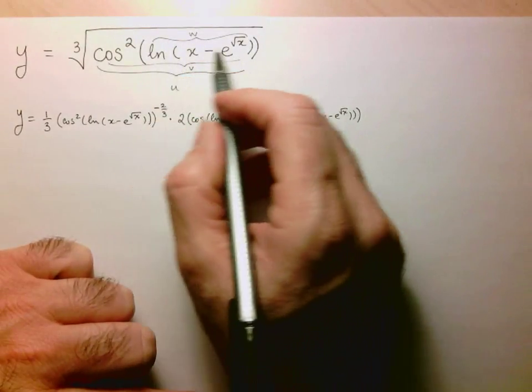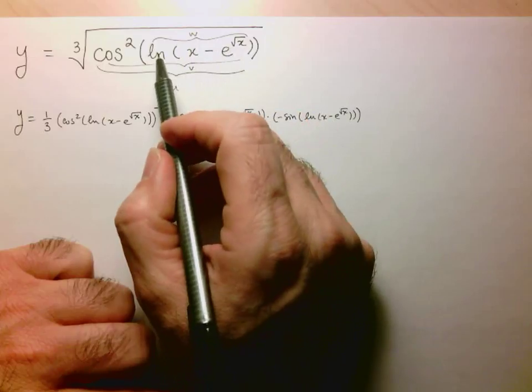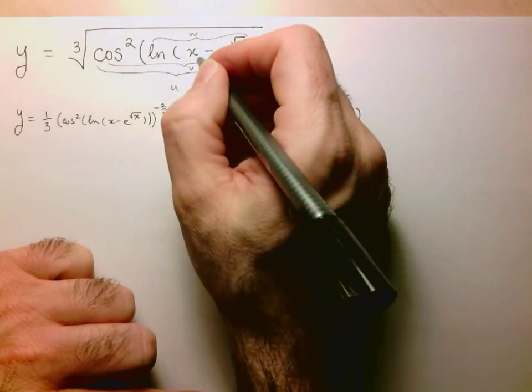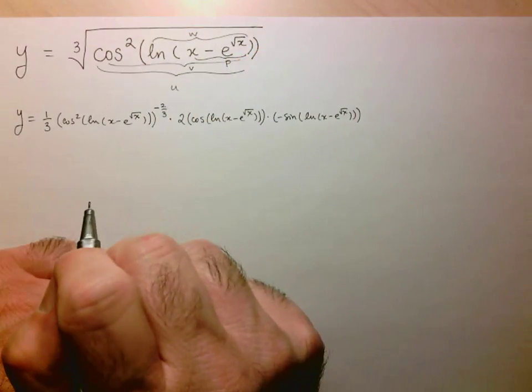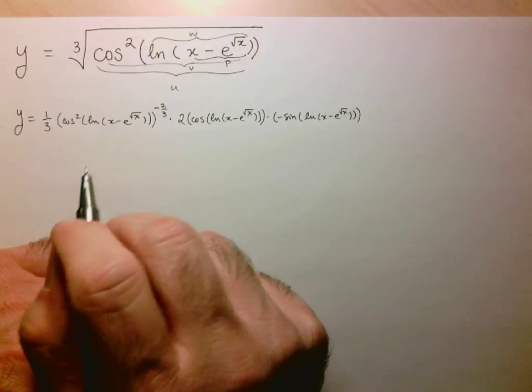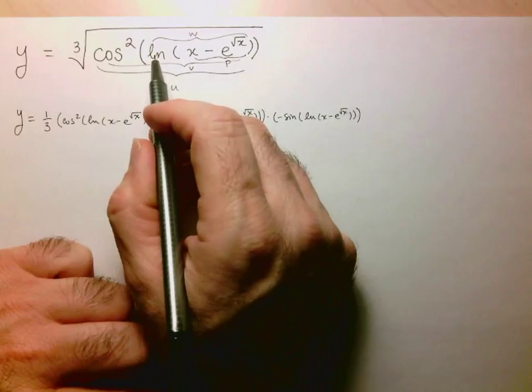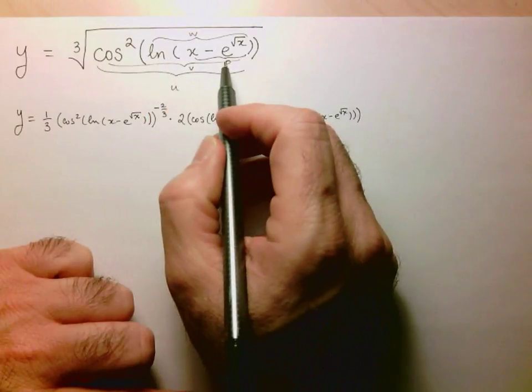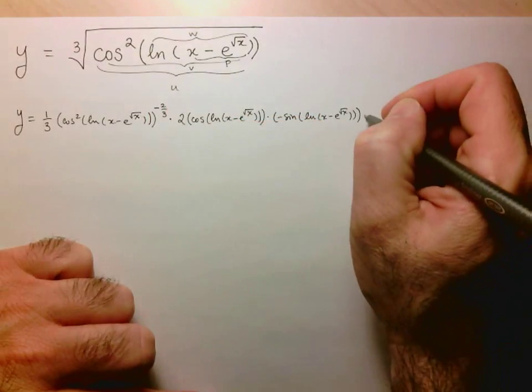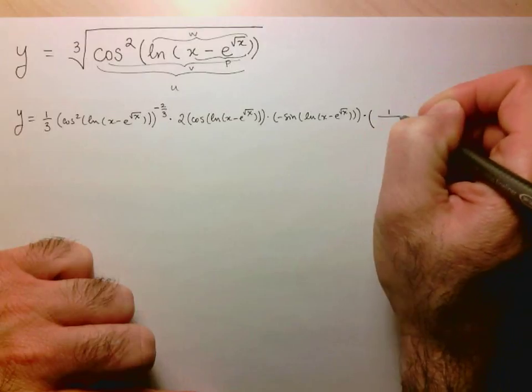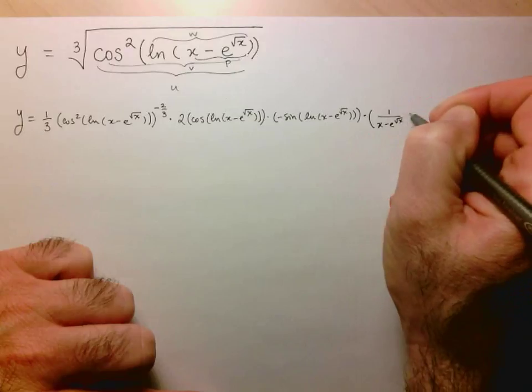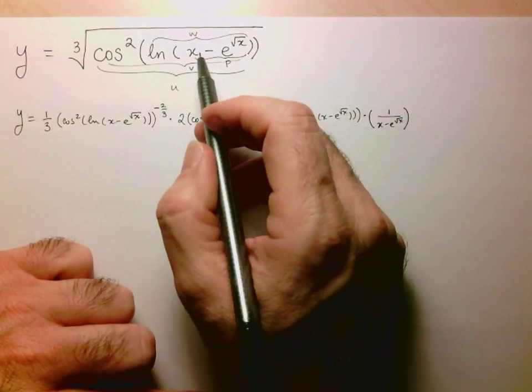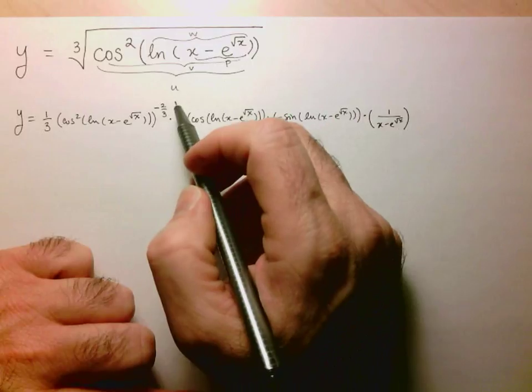Now I have to take the derivative of this w. In this expression w I see the logarithm of some expression, so this expression here will be, let's call that p. I have to take the derivative of ln p, which is just 1 over p. So I'm multiplying here by 1 over, and p is just x - e^√x.